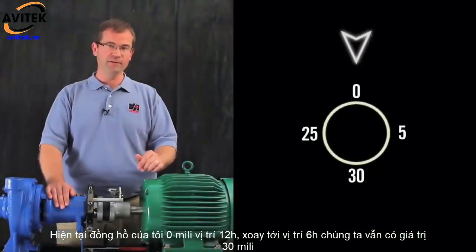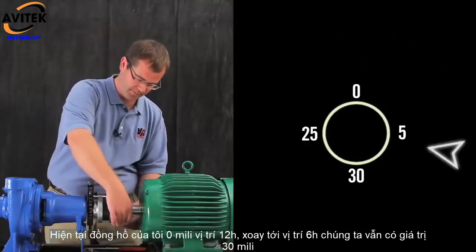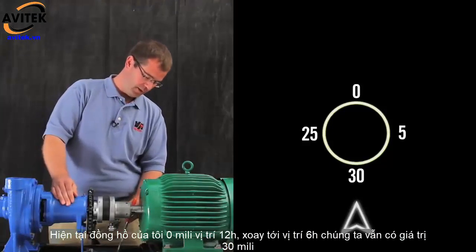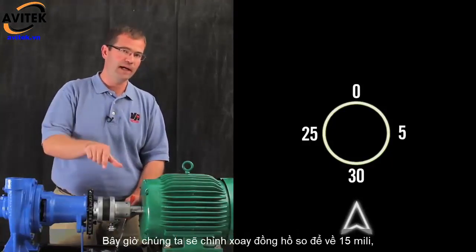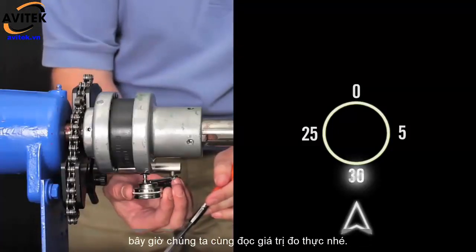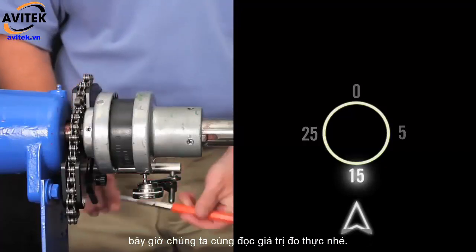I already have the indicators at 12 o'clock that have been zeroed, so I'm going to roll it down to 6 o'clock. And remember we had 30 mils. I'm going to roll the dial halfway back to 0 or to 15. Now, our dial is reading True Position.